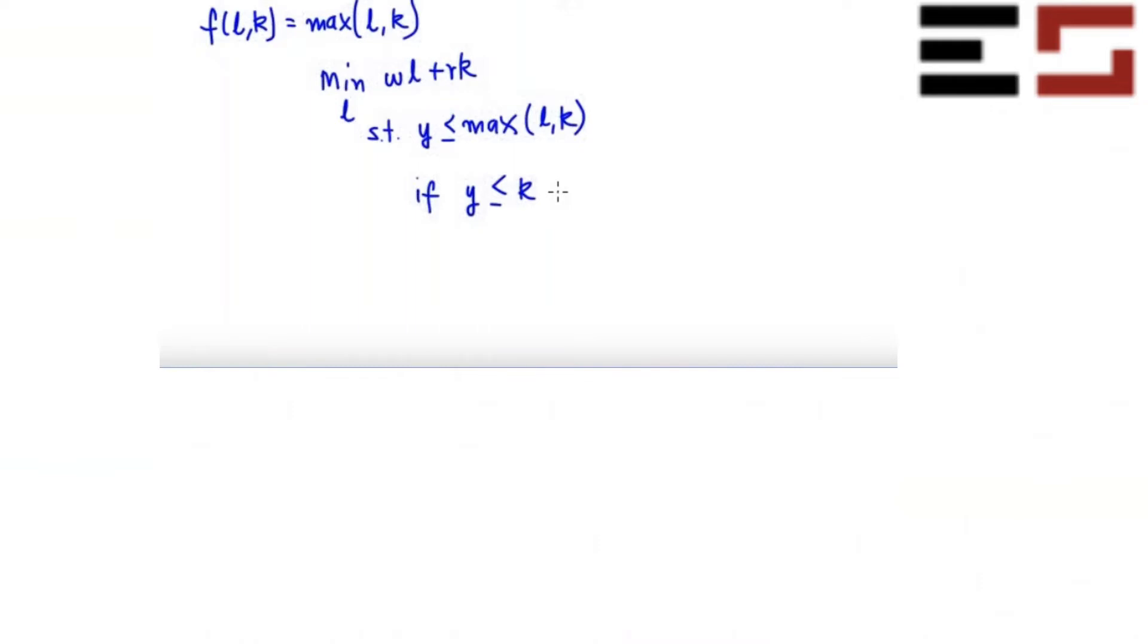So if you want to produce y units of output and you have K units of capital, and K is greater than or equal to y, how much labor should you choose so that you minimize cost? Just think about it. Think like a businessman.